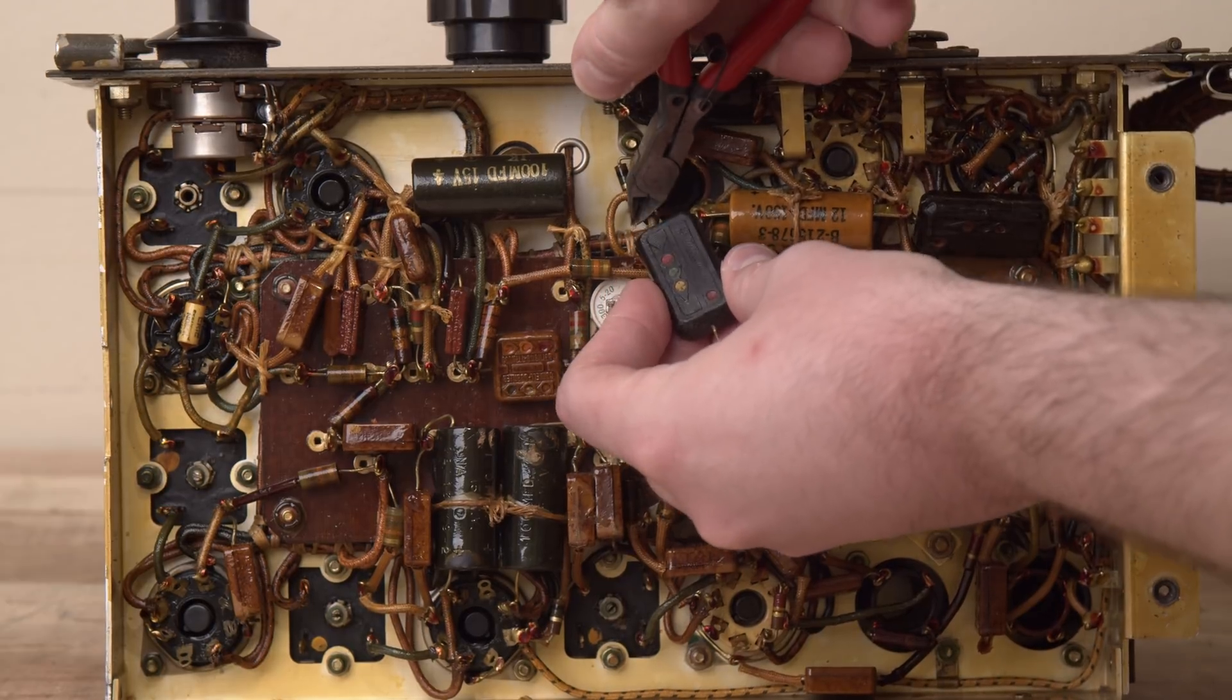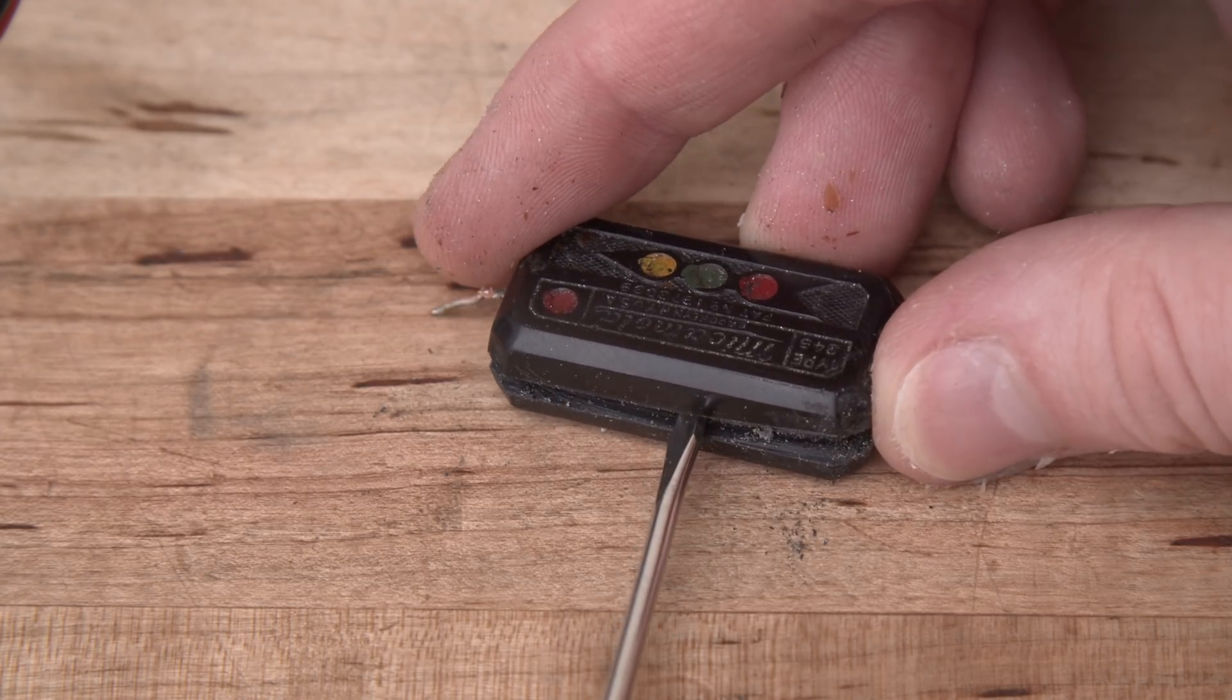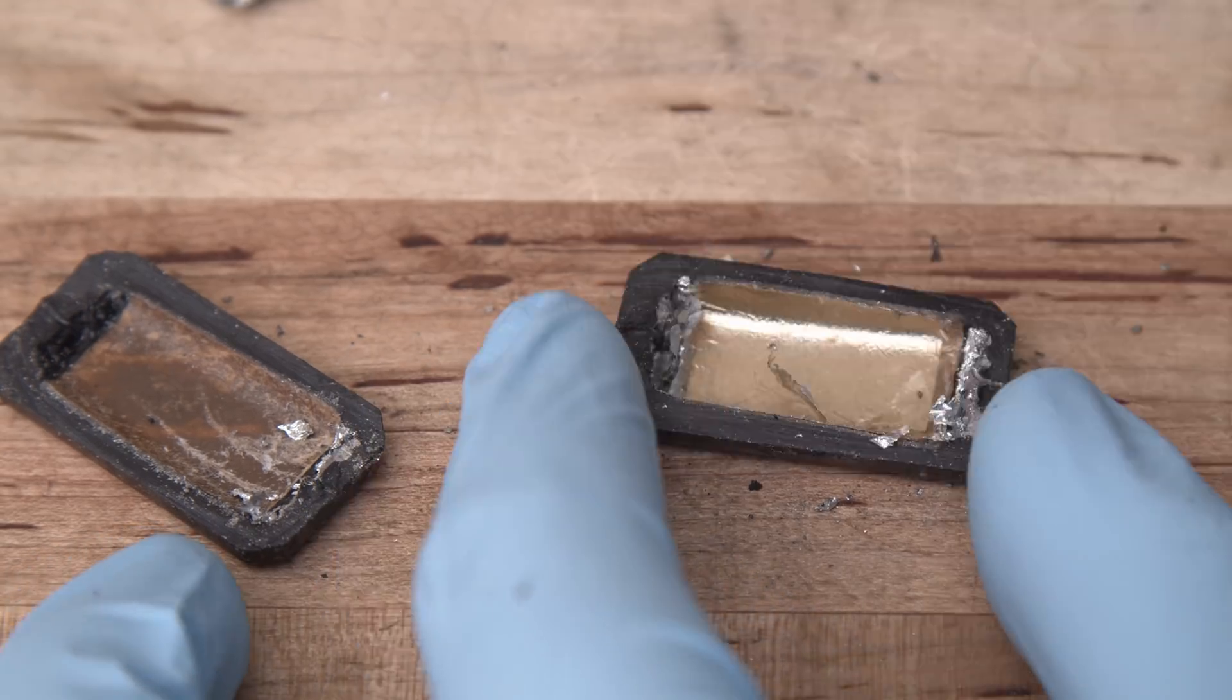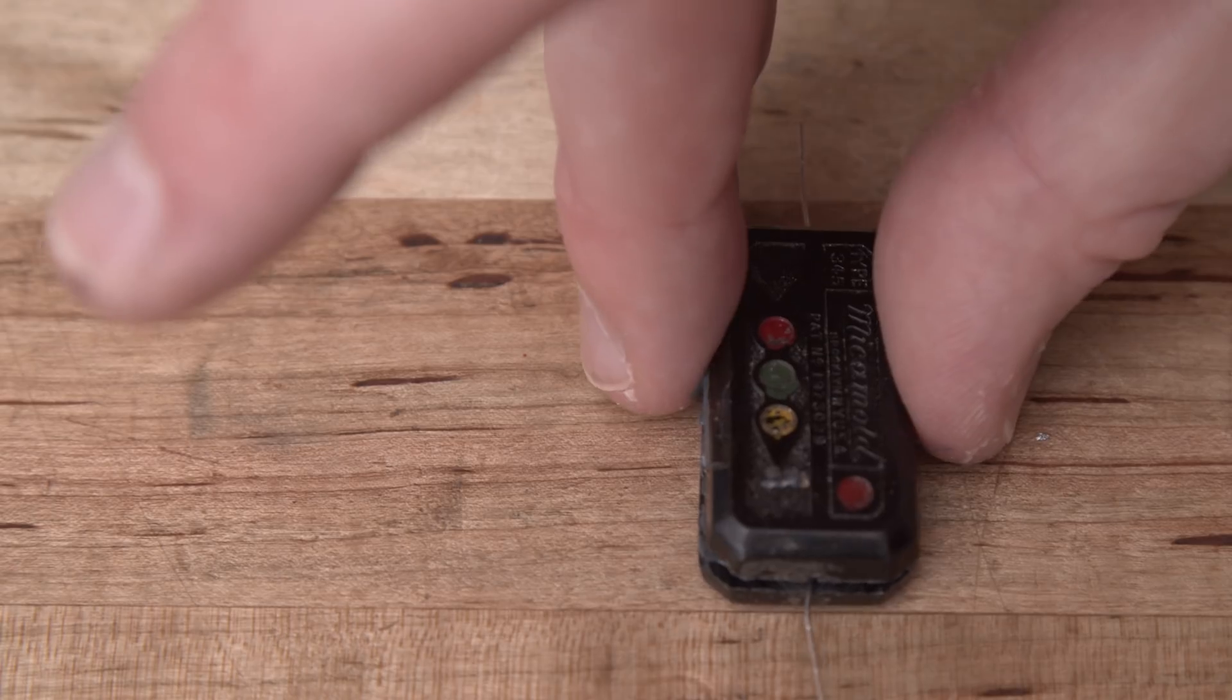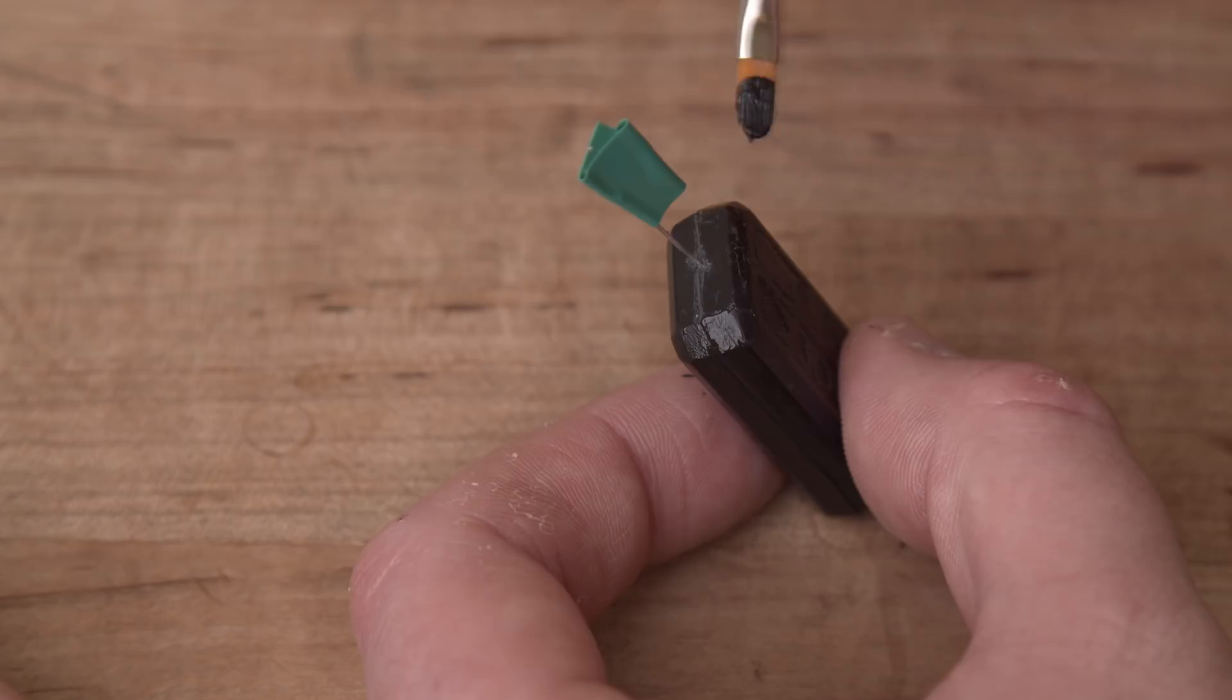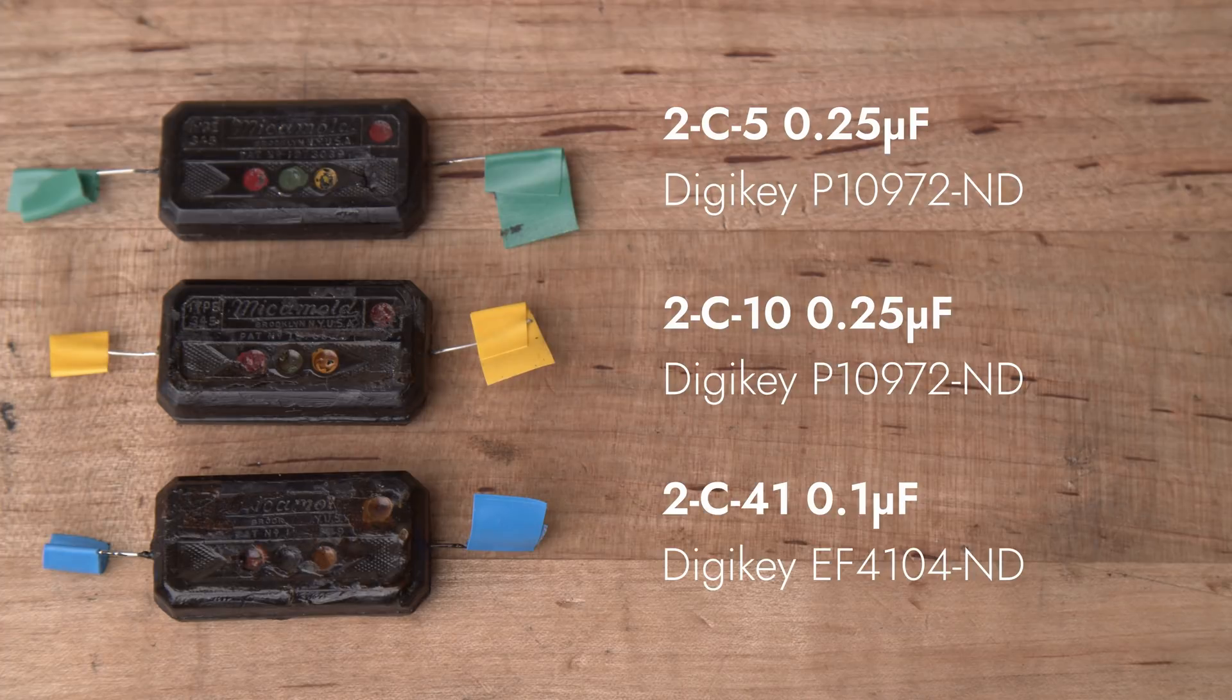I removed the offending component from the radio and cut it carefully down the middle with a fine blade. Then I opened the case and pulled out as much of the original foil pack as I could. I glued a high-quality modern capacitor into the case cavity, then sealed the case back up. After the adhesive dried, I painted the seam to cover the repair. I repeated this process for each of the Micomolds in the receiver circuit. The designators for the caps I replaced are listed on screen, alongside the replacements I chose.